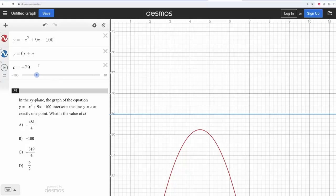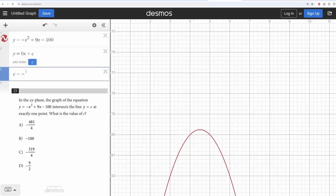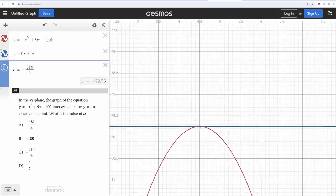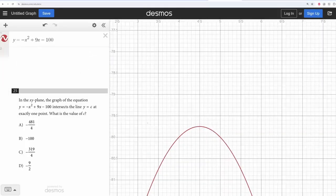So instead, let's manually input all four answer choices into Desmos. Negative 41 over 4. Nope, that's not touching. Negative 100. Nope, that's not touching. Negative 319 over 4. There we go. But this seems much longer and more tedious than it should be. If we acknowledge that the point of intersection is the vertex of the quadratic, then we don't even need this line. We can just graph our quadratic, click on the vertex, and that's our answer.